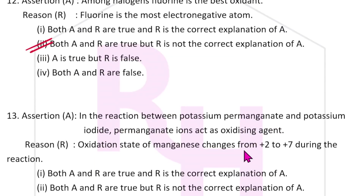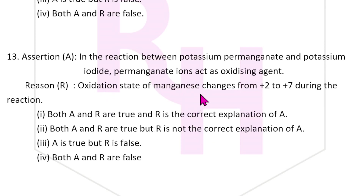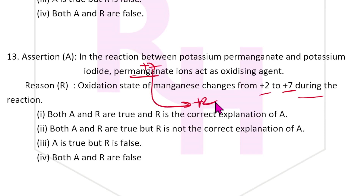Thirteenth question: In the reaction between potassium permanganate and potassium iodide, permanganate ions act as oxidizing agent — that is definitely correct. Assertion A is true. But the reason states the oxidation state of manganese changes from +2 to +7 — that is wrong. In permanganate, Mn is +7 and it gets reduced to +2. So R is false, and the answer is the third option.